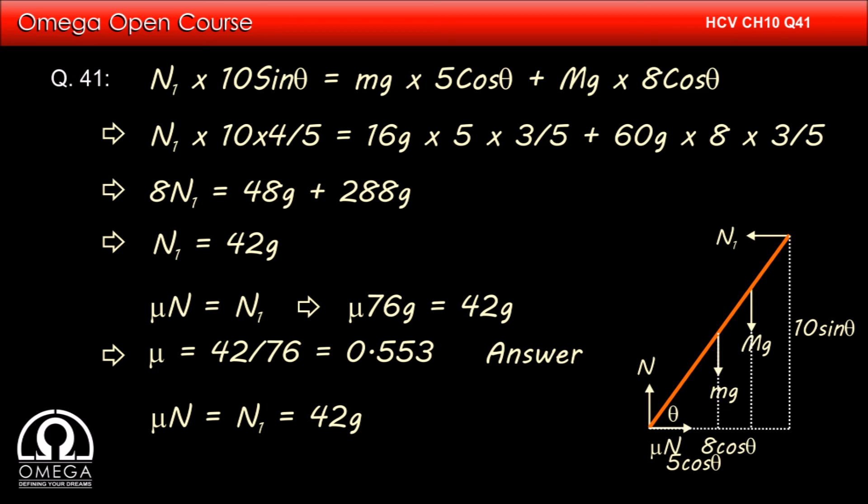Putting g equals 9.8 meters per second squared and rounding it off to 3 significant figures, we get 412 N. This is our answer.